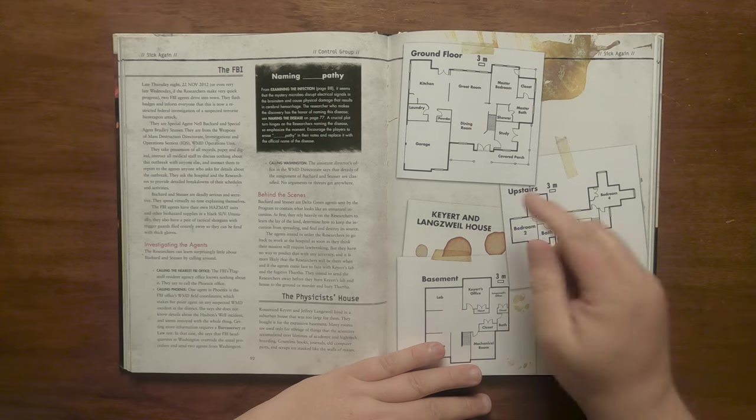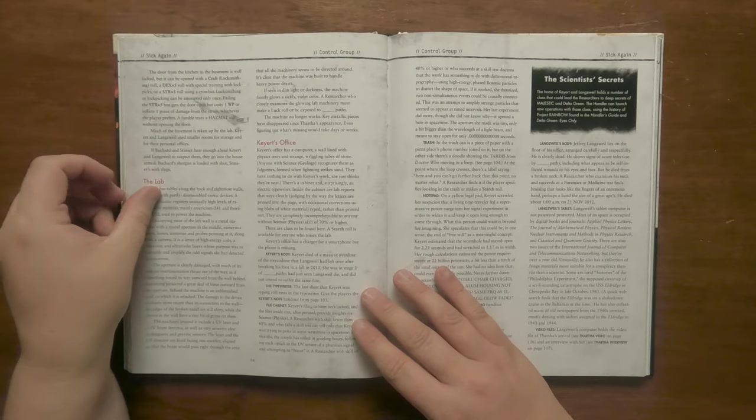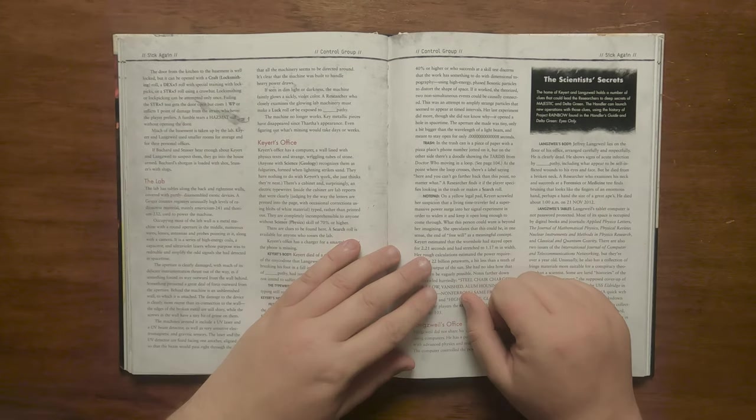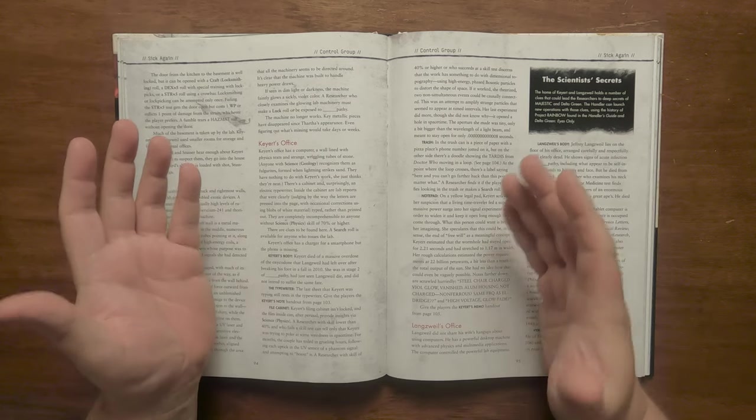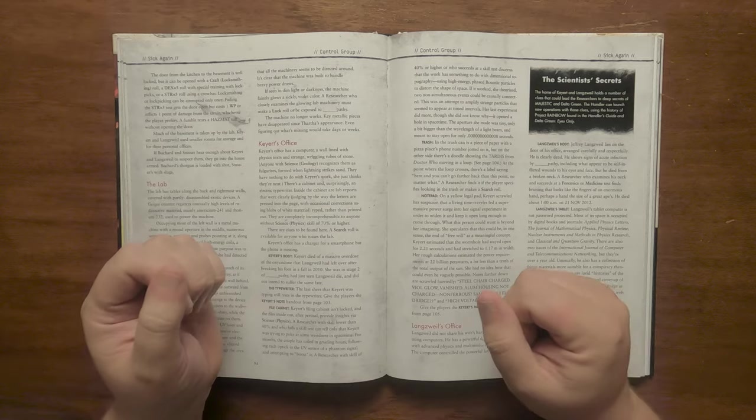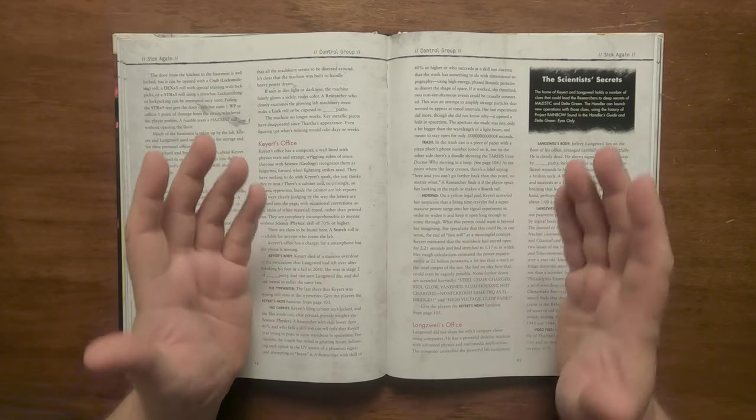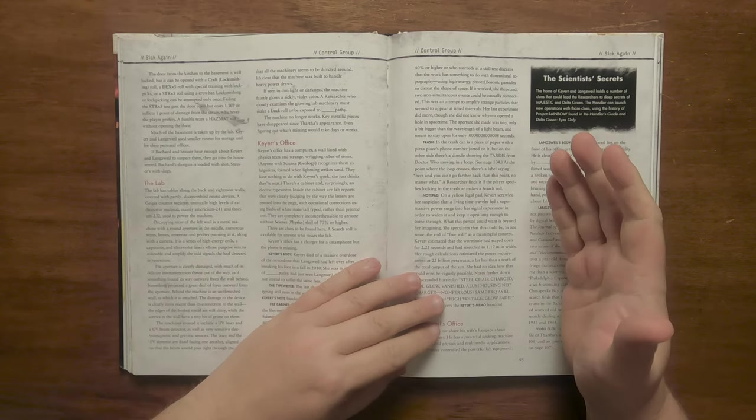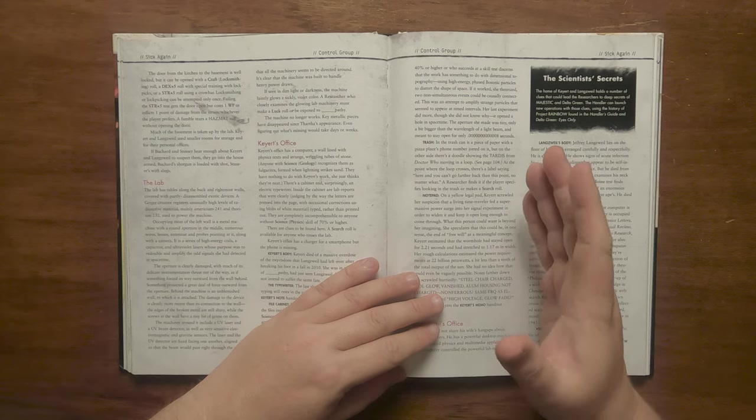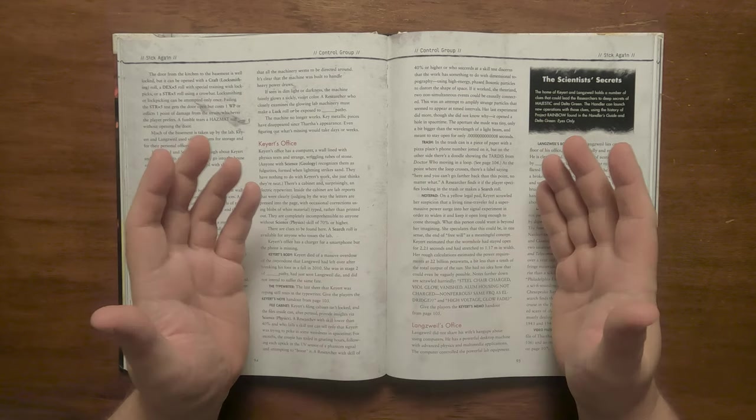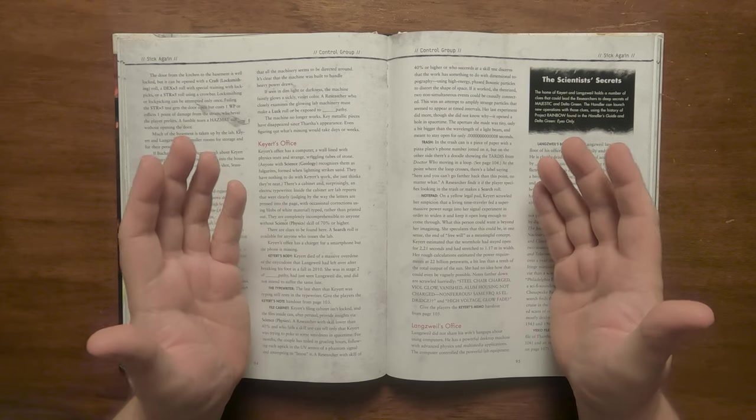The couple essentially had a house that was too big for them, but made the investment based on the huge basement. Lots of rooms in the house are filled with scientific documents accumulated over the years, books, journals, computer parts etc. The basement is well locked but can be bypassed using various methods and contains their lab. Should the Delta Green agents suspect anything with regard to the Physicist's house, they will go there armed. The lab itself is as you might expect, tables loaded with strange exotic devices and the like and a large metal machine with a circular aperture in the middle. If the researchers have a Geiger counter then the room will have high levels of radiation. The machine is surrounded by various lenses, wires, probes and antennae aimed at it as well as a camera. There are high energy coils, a capacitor and ultraviolet lasers that serve a purpose unknown to the researchers.